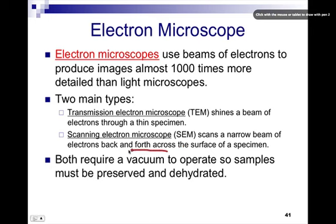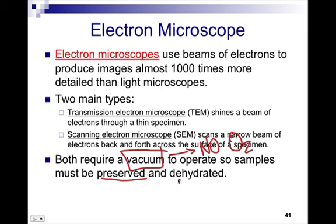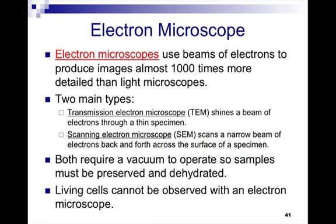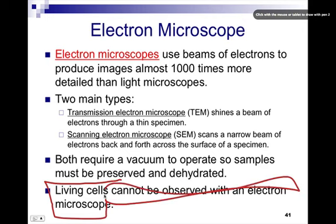One thing that you must know about a vacuum is in a vacuum there is no oxygen, so the samples must be preserved and dehydrated. In other words they have to be dead. Specimens must be dead when you are using an electron microscope. Living cells cannot be observed with an electron microscope, and if you know Miss Carrie you know this is going to be a test question whether it's true or false or whatever. Living cells cannot be observed with an electron microscope.